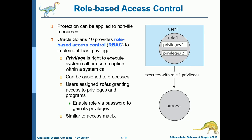Next is role-based access control (RBAC). Protection can be applied to non-file resources. The operating system that implements RBAC is Oracle Solaris 10. A privilege is the right to execute a system call or use an option within a system call. It can also be assigned to processes. With RBAC, users are assigned roles granting access to privileges and programs; a role is enabled via password to gain its privileges. This is similar to the access matrix — a user can have one or many roles, and a process executes with the privileges of that role.